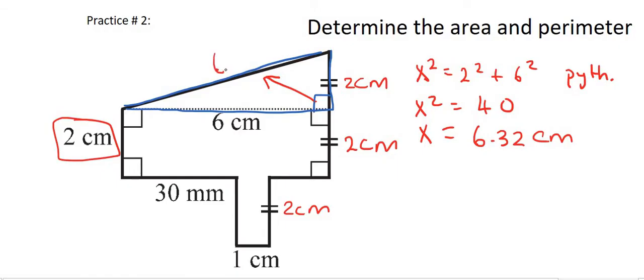Now, always check your answer. In this blue triangle, we know that the side that we've just worked out must be the longest. And so it makes sense that it's 6.32 because this one is 6 and this one is 2.